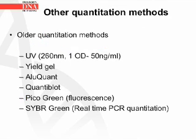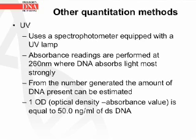We will now go over some other quantitation methods: UV, yield gels, aluquant, quantablot, picogreen fluorescence, cybergreen — which is a form of real-time PCR quantitation. Let us begin with the UV method.